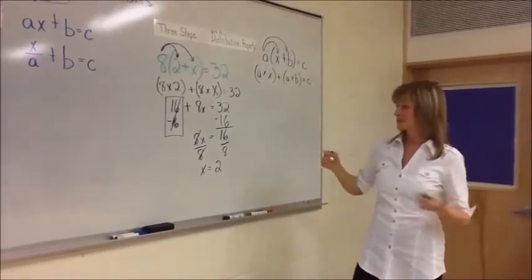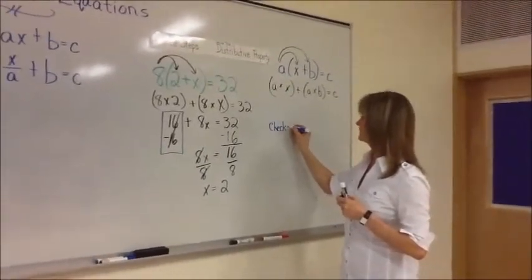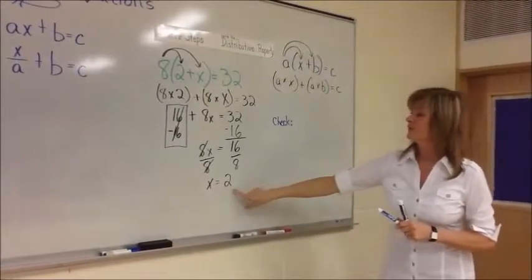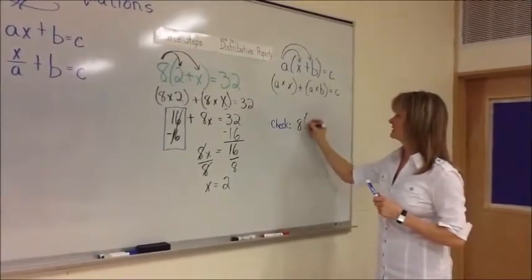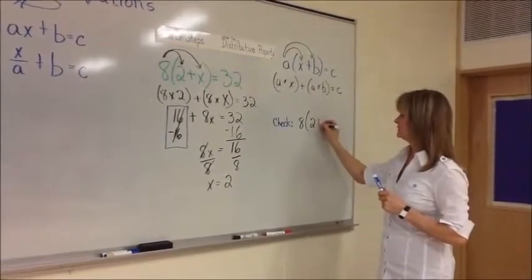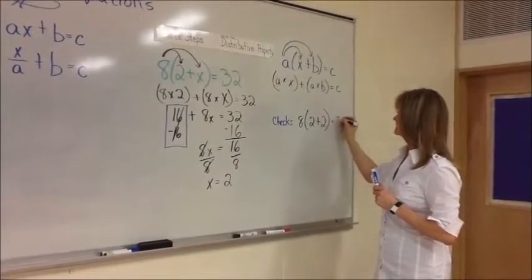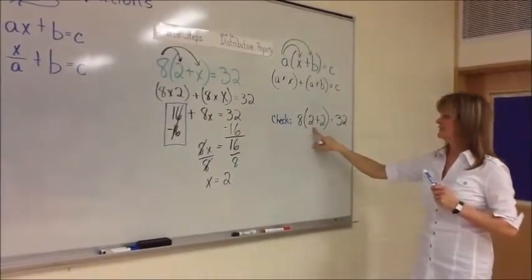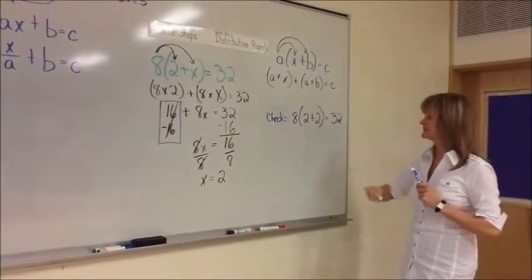But to double check and make sure that it is your answer, you're going to run a check from your original equation. So we put now, wherever there's an X, we put two. So this equation is eight, two plus two equals 32.